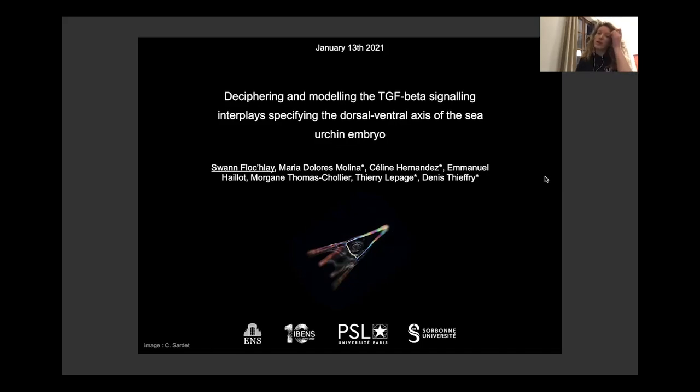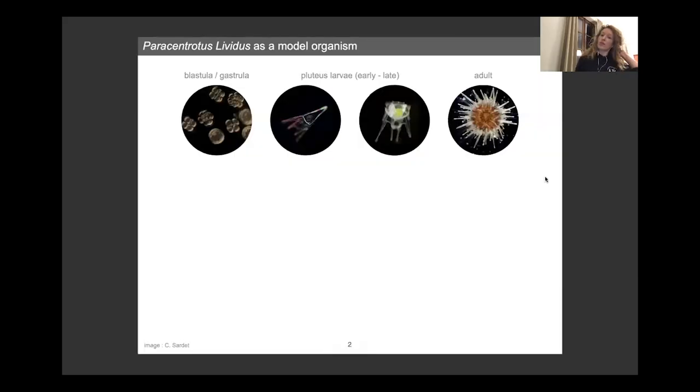So I'm working on the sea urchin embryo. The sea urchin embryo is going through different stages along its larvae life. It's shaped kind of in an Eiffel Tower, as you can see here. And during this larvae stage, the embryo has to start specifying different axes of its body plan and notably the dorsal-ventral axis.